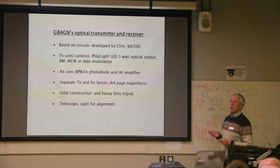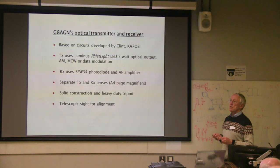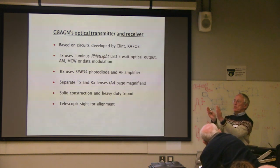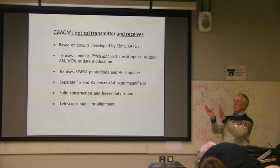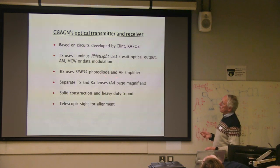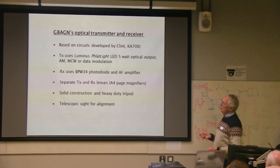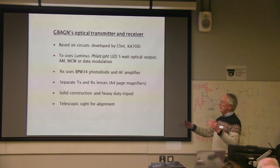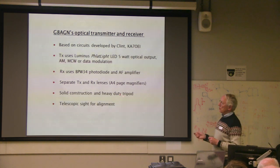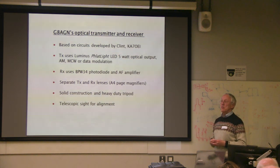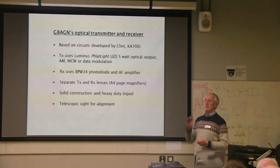You certainly wouldn't want to look at one of these directly — you could definitely damage your eyes. But because you can see the beam of red light coming out, aiming is very easy — you just move it until the beam points in the right direction. The receiver is basically a photodiode and audio amplifier. I use separate transmit and receive with two A4 page magnifier lenses, making the system quite large, but it's a solid construction on a tripod.